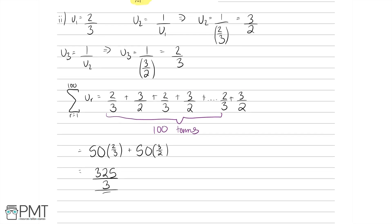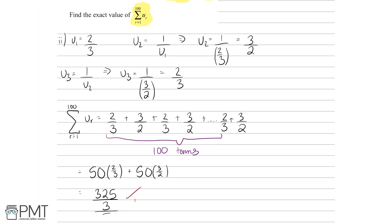In terms of marking for this question: you'll get one mark for the correct final answer, one mark for realising this is an indefinitely repeating sequence of 2/3 and 3/2, and one mark for realising that half of the 100 terms are 2/3 and half are 3/2 — for a total of 3 marks.